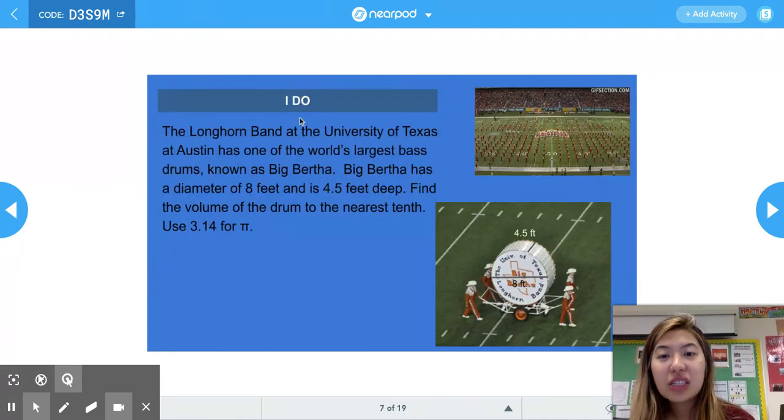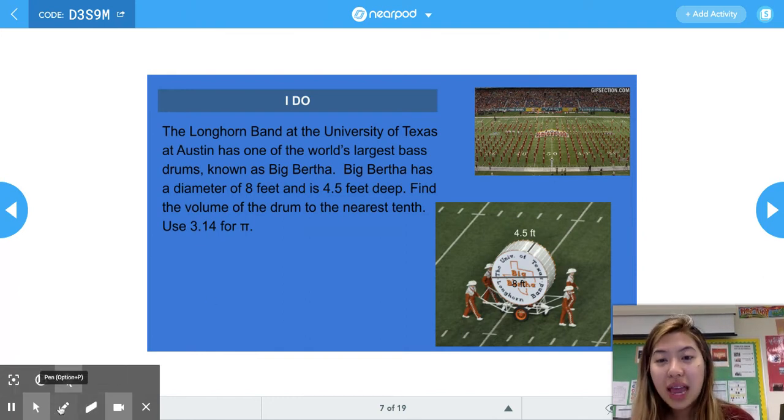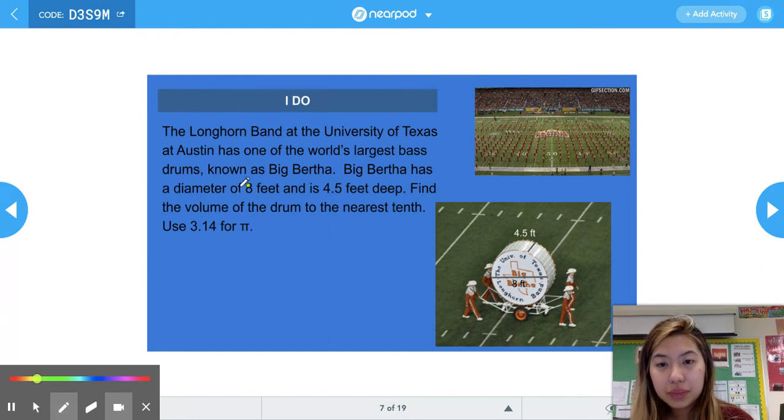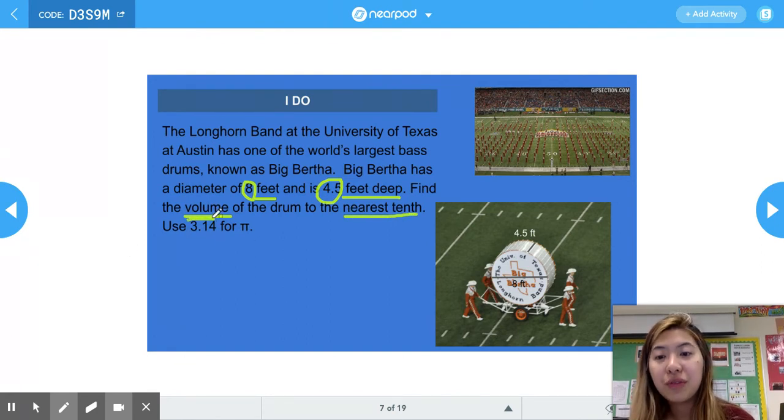For this first I do problem, it reads the Longhorn Band at the University of Texas at Austin has one of the world's largest bass drums known as Big Bertha. Big Bertha has a diameter of 8 feet and is 4.5 feet deep. Find the volume of the drum to the nearest tenth. Not only do we have to find the volume, but we also have to round it to the nearest tenth, and use 3.14 for π.